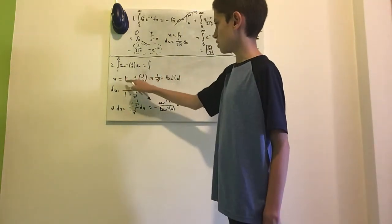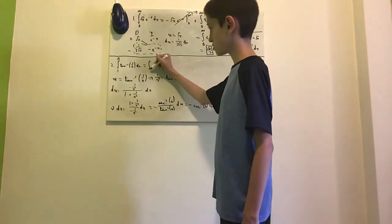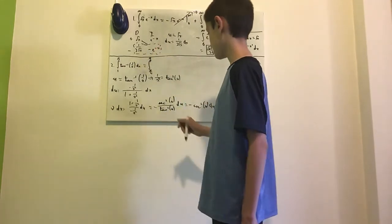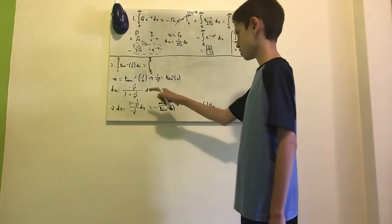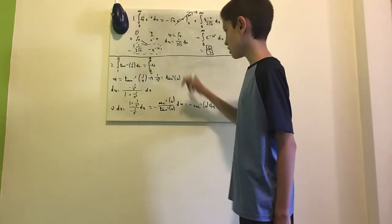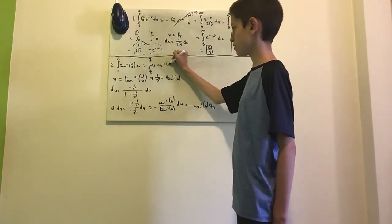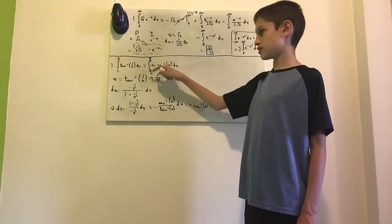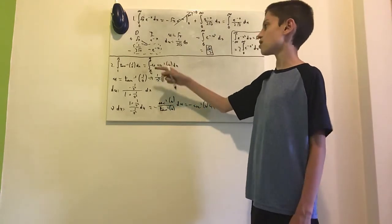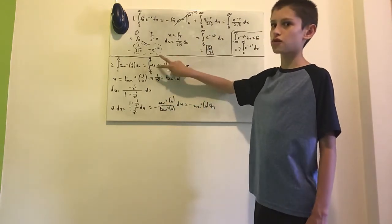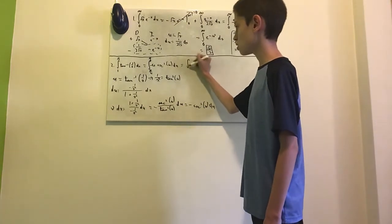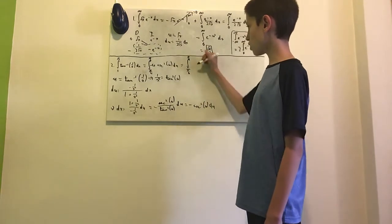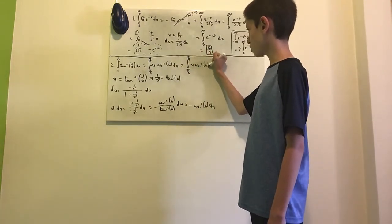Plugging everything in: arctan(1/1) equals pi over 4, and arctan(1/√3) equals pi over 6. So we have the integral from pi/6 to pi/4 of u times negative cosecant squared of u du. We have a minus sign, and we have a minus from the substitution, so we can interchange the two bounds of integration to get the integral from pi/6 to pi/4 of u cosecant squared of u du.